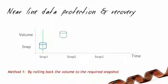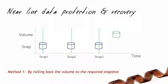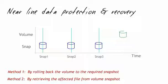Near-line Data Protection and Recovery: Scheduled Volume Snapshots may be taken at frequent intervals. In the event of a logical data disaster like accidental deletions or virus intrusions, the affected file or files may be recovered quickly from the snapshots. This can be done either by rolling back the volume to the appropriate snapshot image, or by retrieving the affected file from the volume snapshot image.